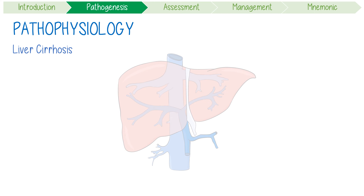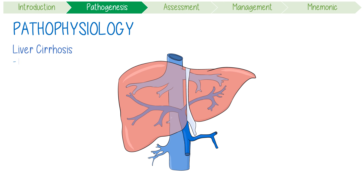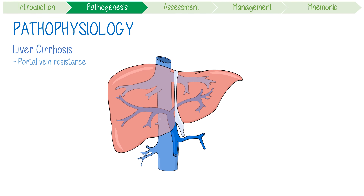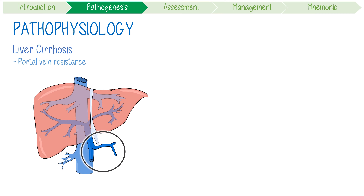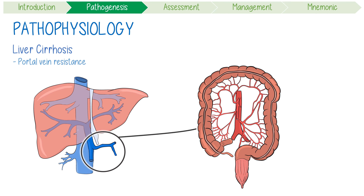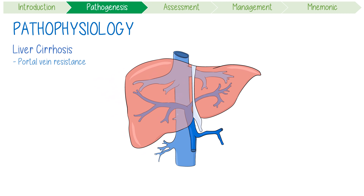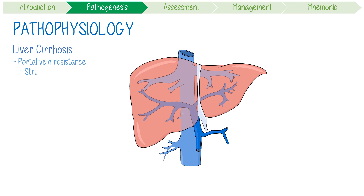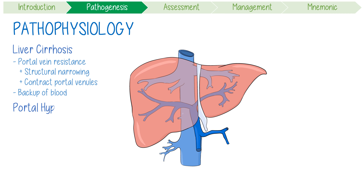Liver cirrhosis makes it harder for blood to move through the portal vein — the vein that carries blood from the gastrointestinal tract to the liver. Cirrhosis does this by causing structural narrowing of the vessel and by contracting portal venules. This results in the backup of blood into the portal veins and its branches, also known as portal hypertension.